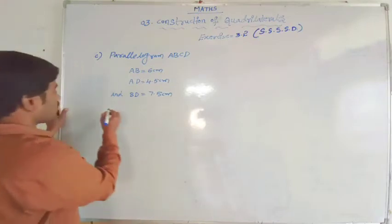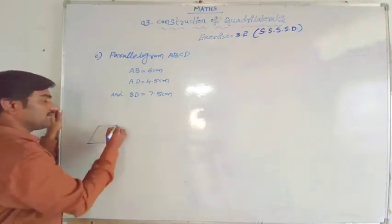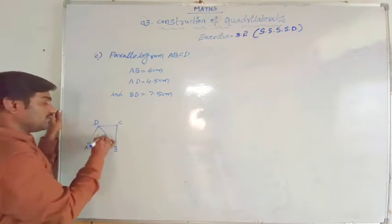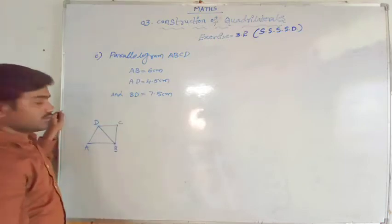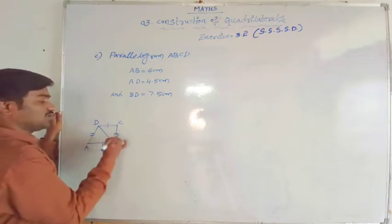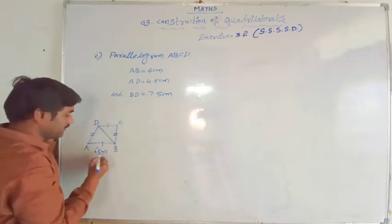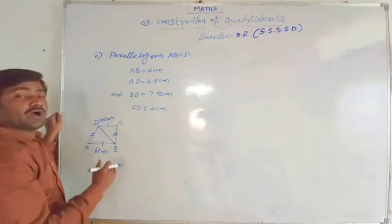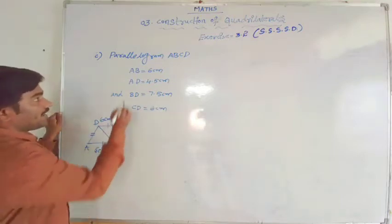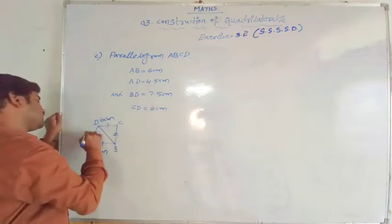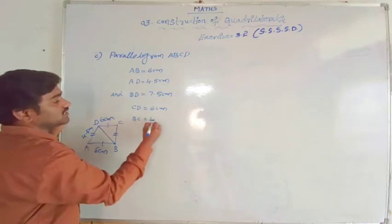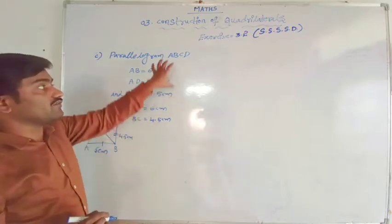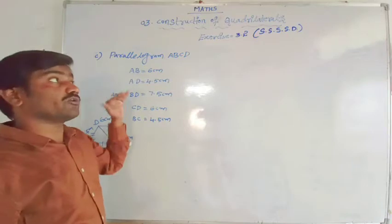BD is a diagonal. Suppose if you draw a rough parallelogram ABCD, BD is the diagonal - it is given. In a parallelogram, opposite sides are equal. So AB equal to 6 centimetres, therefore CD equal to 6 centimetres. And AD equal to 4.5 centimetres, therefore BC equal to 4.5 centimetres. By using properties of a parallelogram, we will get the other 2 sides.